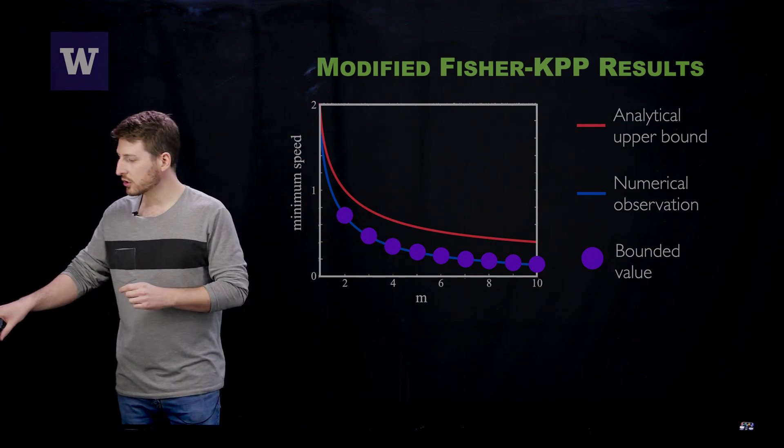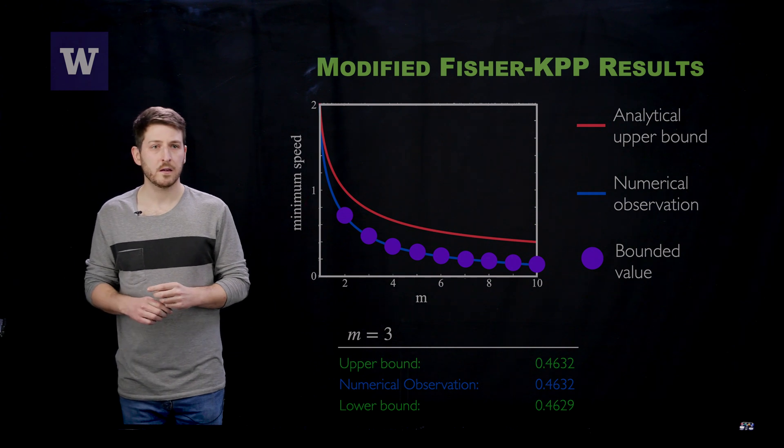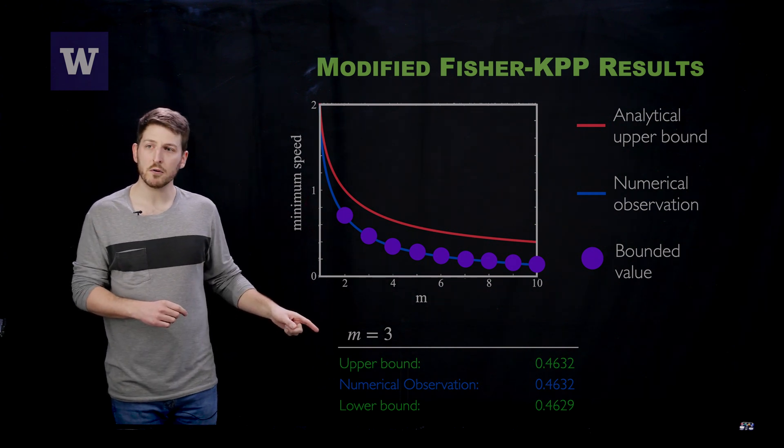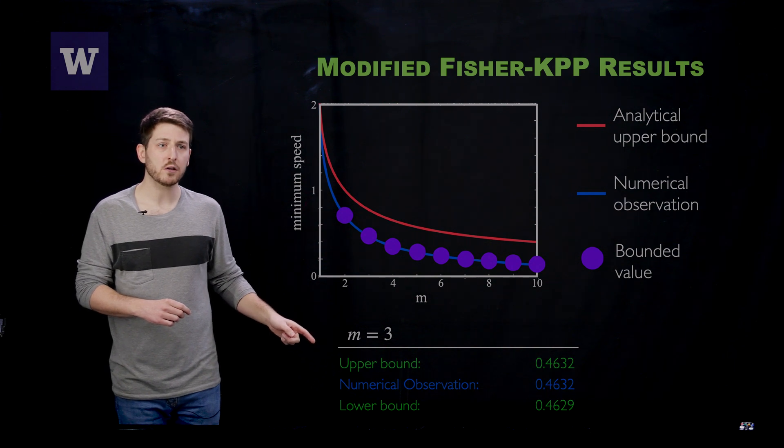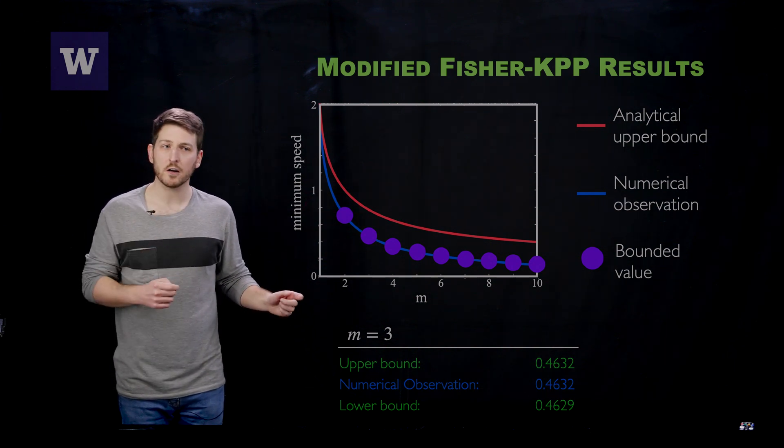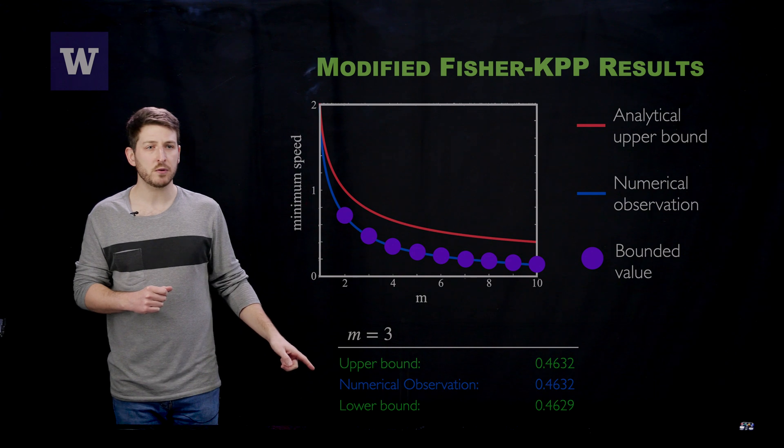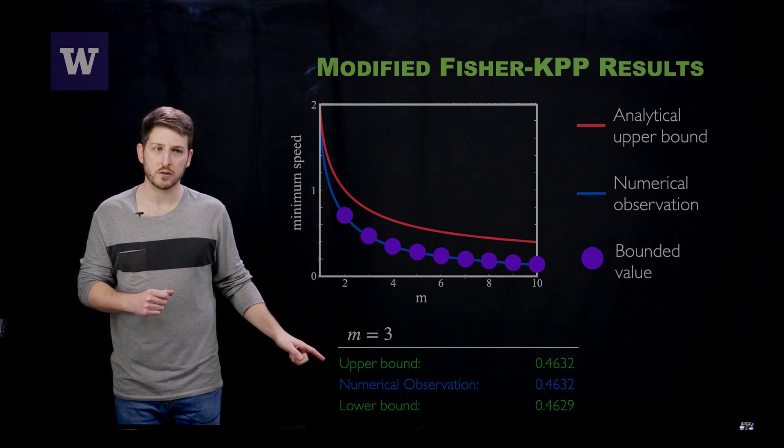To illustrate how sharp these bounds actually are, I'm just providing a sample of the data from m = 3 here. You can see the upper and lower bounds are very close, and wedged right in between them is that numerical observation due to Billingham.